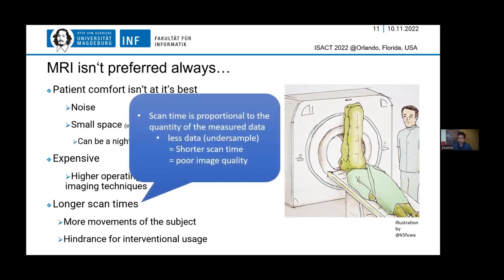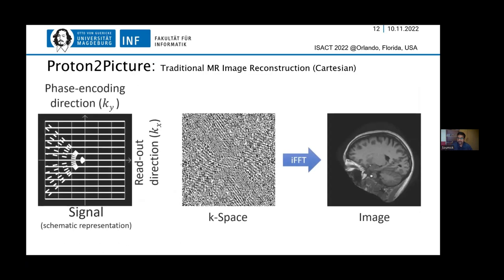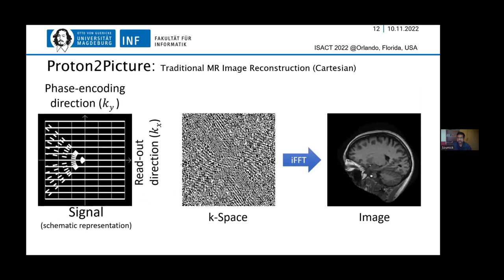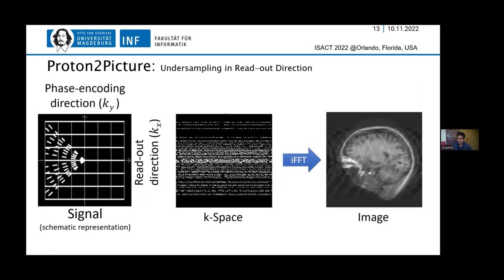This longer scan time is exactly what I worked on. The scan time is proportional to the amount of data we are measuring, so if we acquire less data, we will be faster — but then image quality would also be poorer. In MRI, data is not acquired directly in image space, but in frequency space or k-space, and we apply an inverse fast Fourier transform to get the image. To make it faster, if we ignore parts of the data, we have undersampling, but we end up with artifacts.